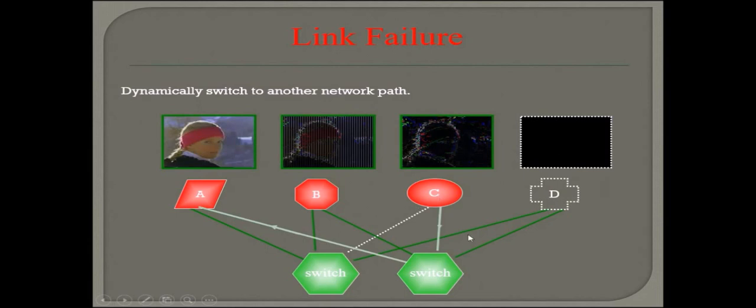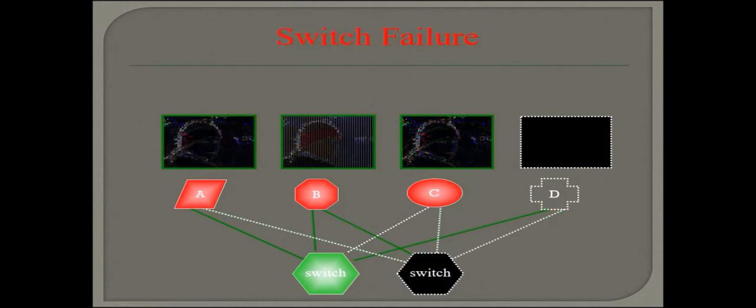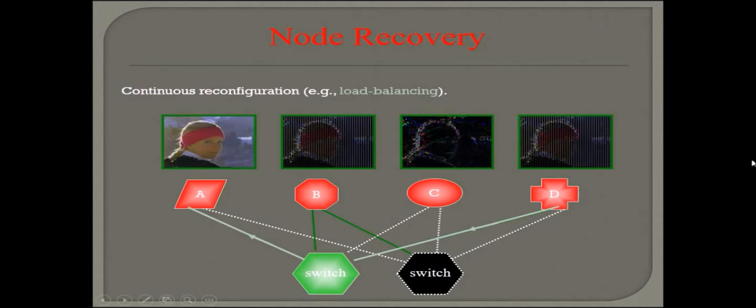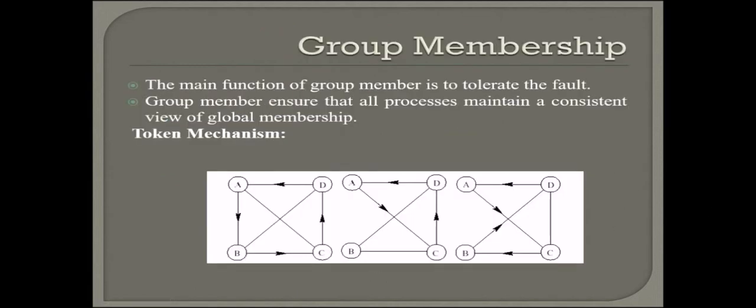This is how we dynamically switch. If there is a link failure, dynamically switch to another network path. If there is a switch failure or if any component fails, what needs to be done is dynamically switch to another network path. What about network recovery or node recovery? Continuous reconfiguration and load balancing is taking place.